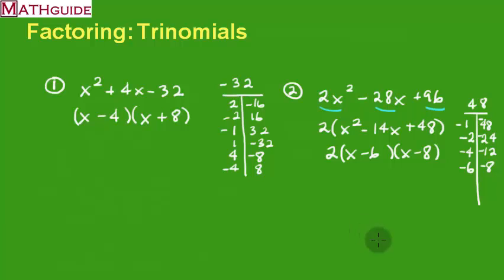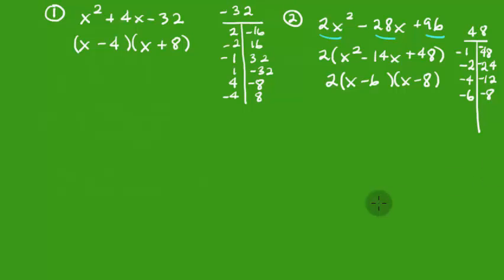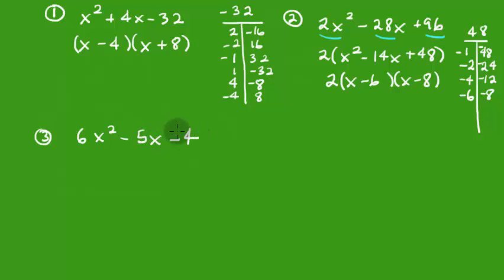Let's look at a problem that gets harder still: 6x squared minus 5x minus 4. First thing I do is look — do these three terms have something in common? No: they don't share x's since the last term has none, and I can't divide them all by a number like 2 since negative 4 can't be divided evenly. So there's nothing I can factor out, and I'll try to factor it as two binomials.